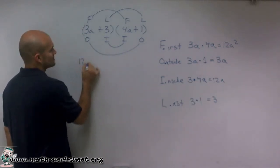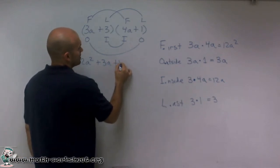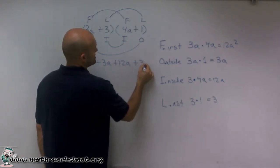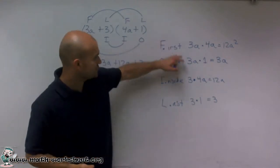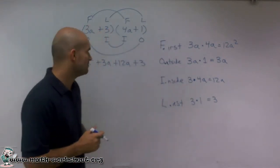And what I'm going to do is just write them out. So I have 12a squared plus 3a plus 12a plus 3. Now it's important to write them in order as you did them, so you don't have to regroup them as you're trying to combine like terms.